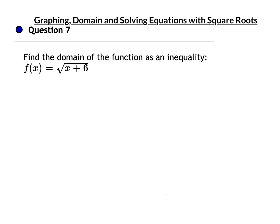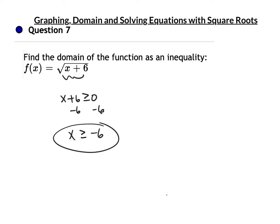Let's find the domain of the next function. The square root can't be negative, which means x plus 6 has got to be greater than or equal to 0. Take 6 off each side, and x is going to have to be greater than or equal to negative 6 to work in this equation.